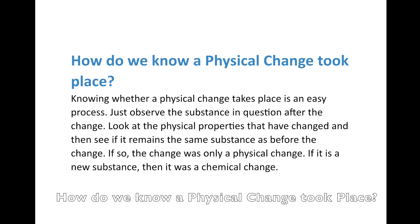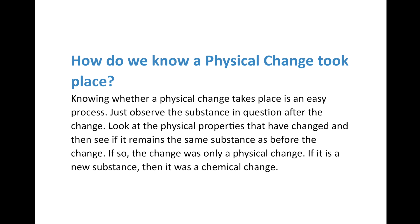So how do we know a physical change took place? Knowing whether a physical change occurs is actually an easy process. You just need to look at the substance in question after the change and look at the physical properties. If the physical properties changed and that's all that changed — if no new substances are made — then it's a physical change. If there is a new substance as a result, then what we have is a chemical change, which we'll talk about in our next lesson.